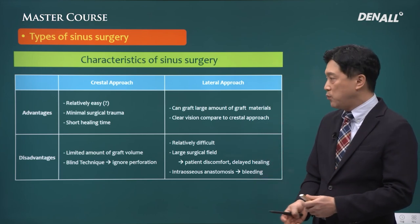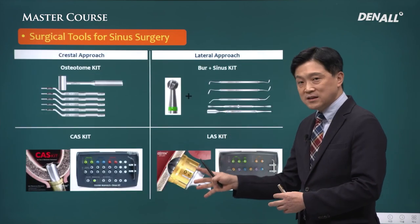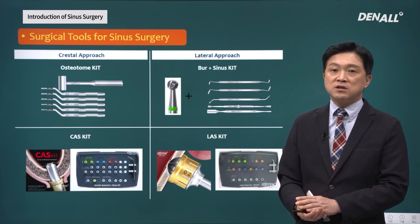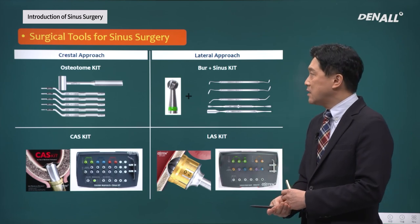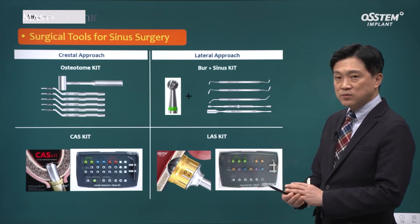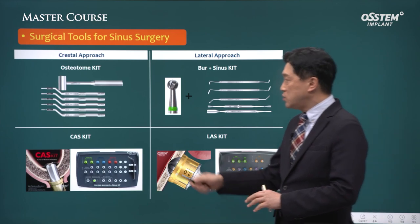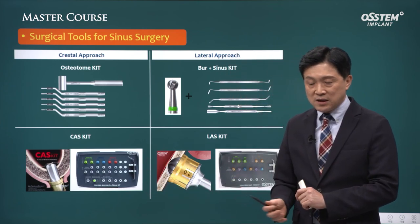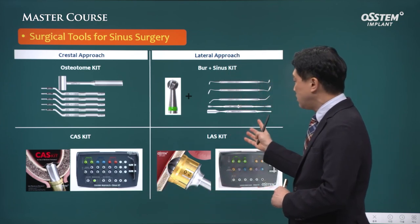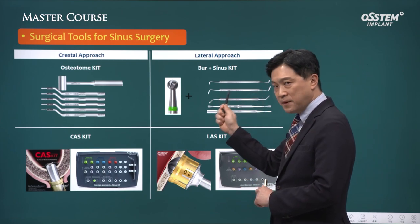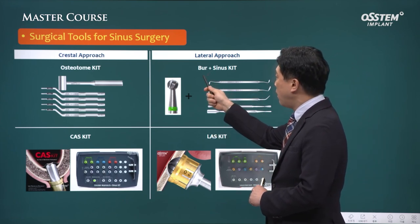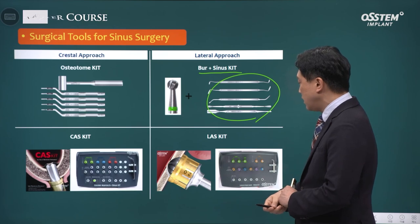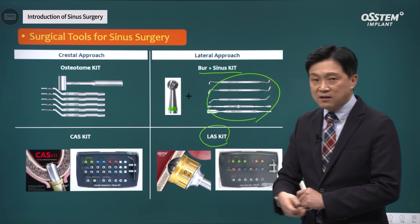Depending on the patient's situation, we need to choose the appropriate procedure and apply it. Crestal approach is done using two different kits — you can use osteotome or also use CAS kit. In the case of lateral approach, you can use the conventional tools like burs and sinus curettes, or LAS kit would help you do lateral approach more conveniently.